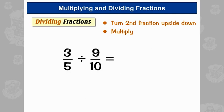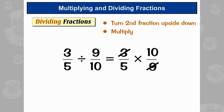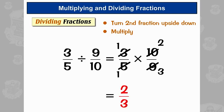Another example. The first fraction stays as it is — 3-fifths. The second fraction, 9 over 10, becomes 10 over 9. Then we times them. We can do a bit of cancelling down: 3 and 9 both divide by 3, and 5 and 10 both divide by 5. Times our tops: 1 times 2 is 2. Times our bottoms: 1 times 3 is 3. Same answer as last time — 2-thirds.